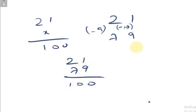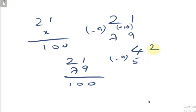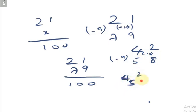What is the complement number of 42? The tens digit 4 minus 9 gives 5. The unit digit 2 minus 10 gives 8. So 42 plus 58 gives you 100.